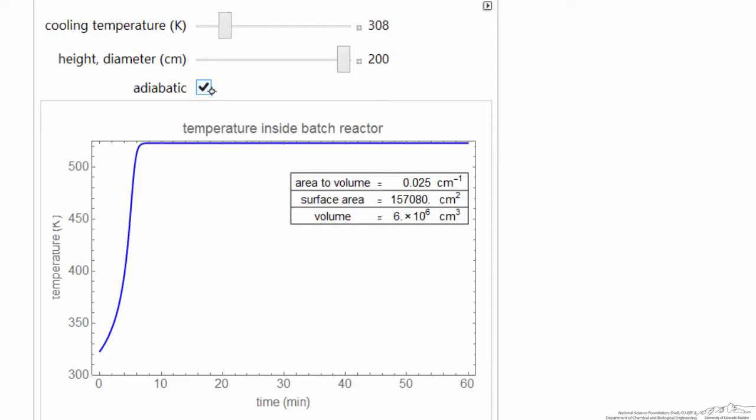We can also click here to see what the adiabatic behavior would be. So if there was no cooling, then we go up to our maximum temperature and stay there. You'll notice we're not very far from that adiabatic temperature, and then the cooling takes over.